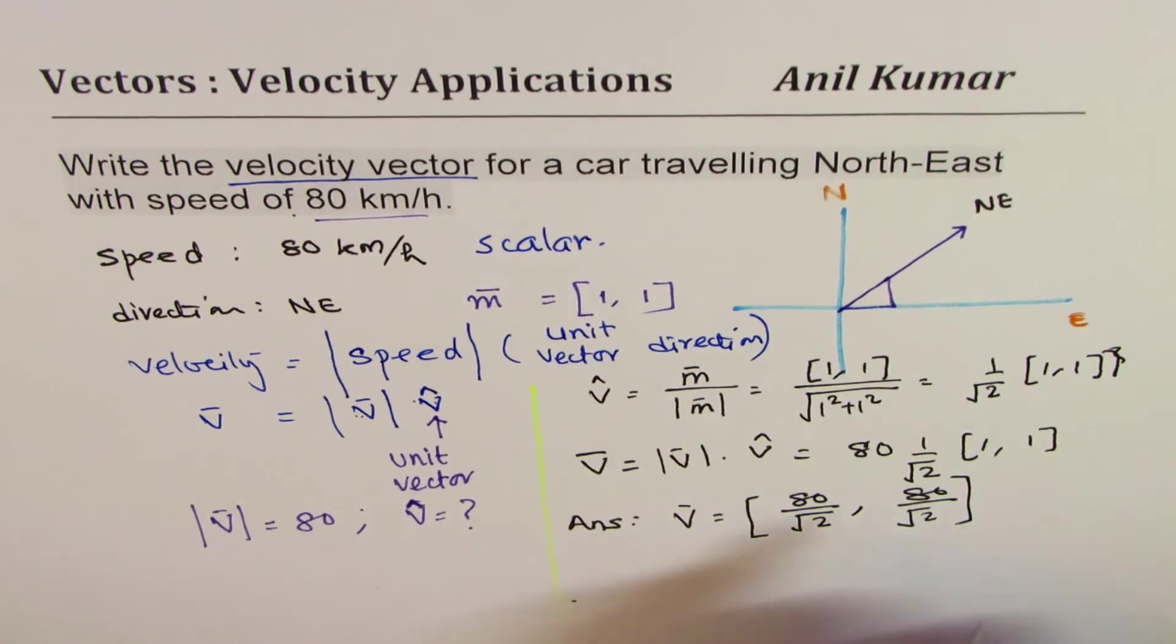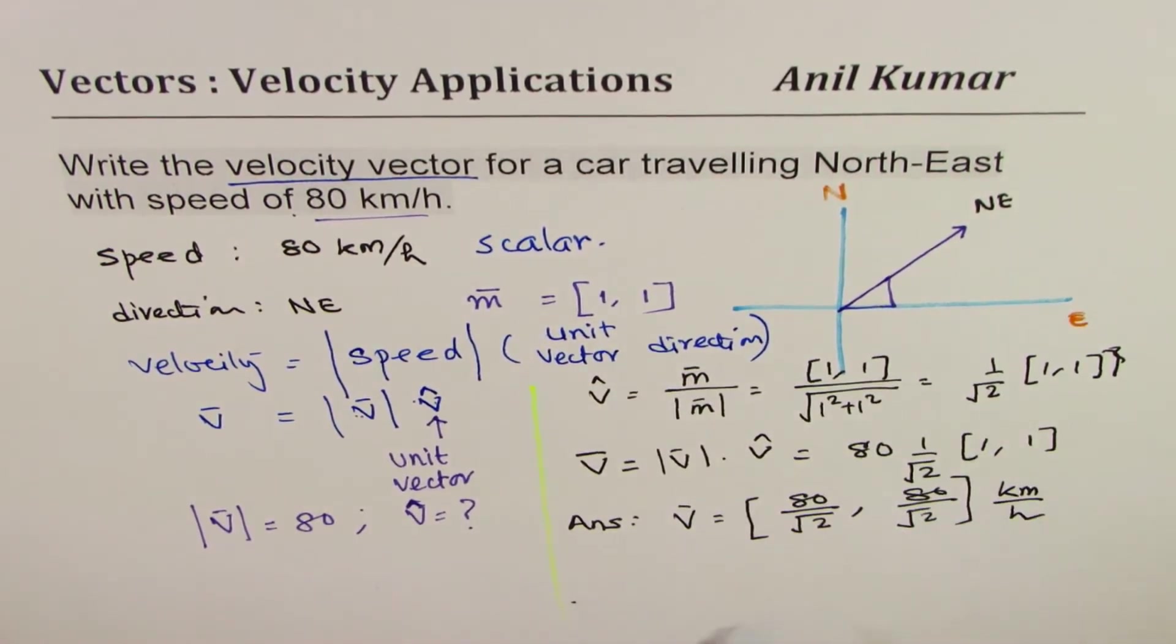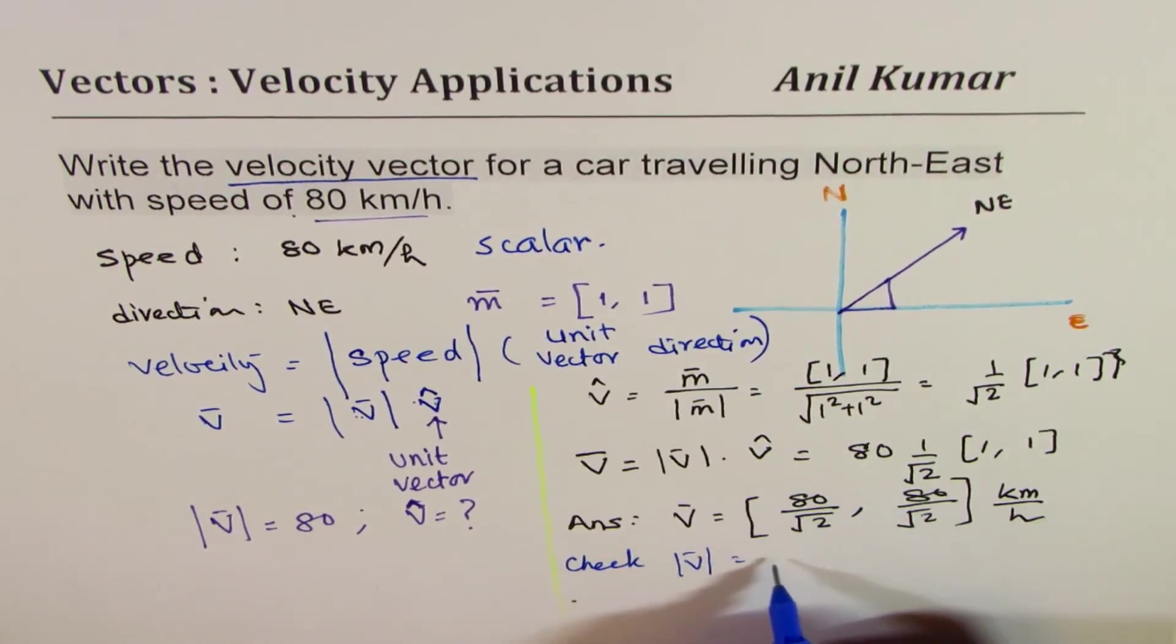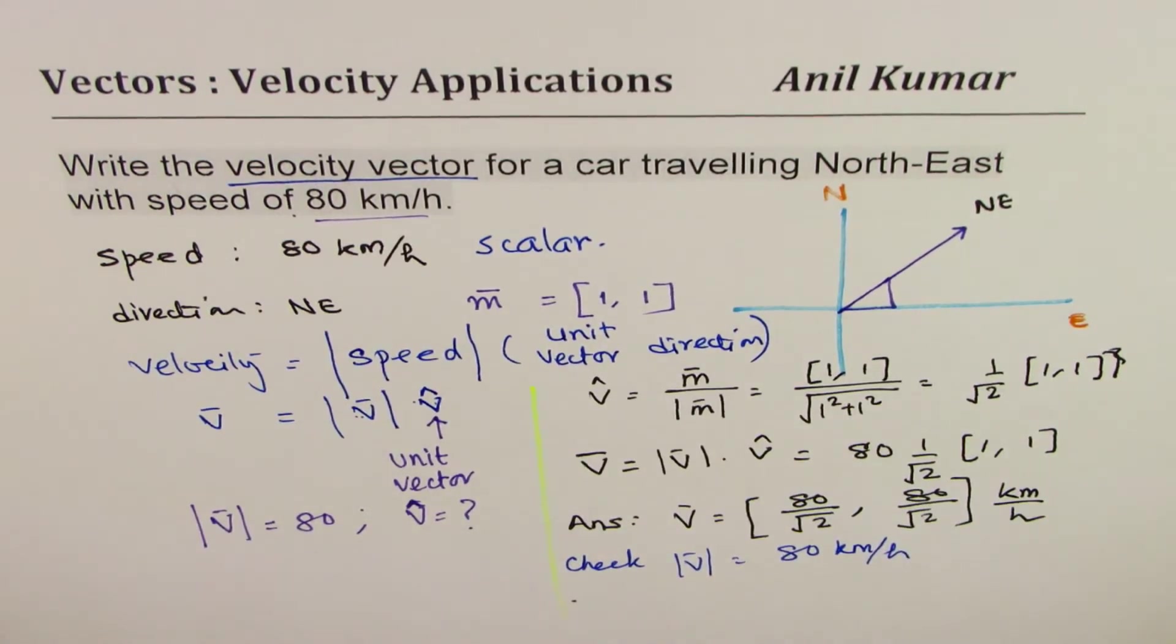Okay so that becomes the velocity and the units are kilometers per hour. What you should do once you get this is check your answer for the magnitude of velocity. That is if you do the magnitude, do you really get 80 kilometers per hour? You will, and that ensures that you have the right answer.